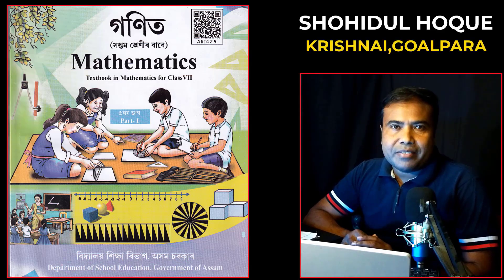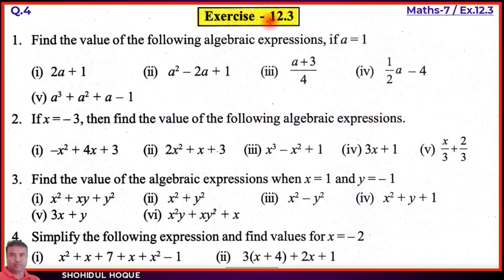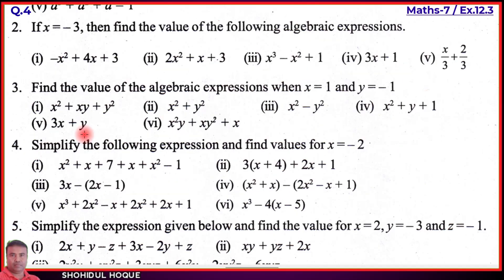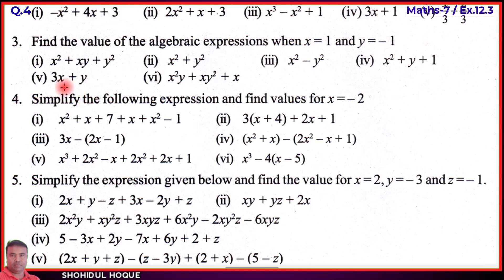I am going to ask you about mathematics class 7 exercise 12.3 English medium question number 4: simplify the following expressions and find values for x equal to minus 2. The expressions have variables and we will simplify each one, then substitute the value.